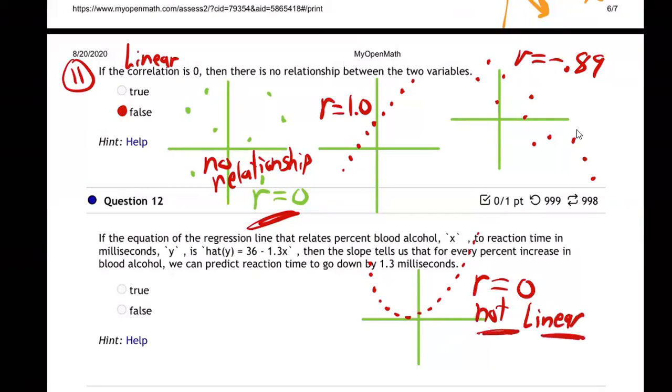relationship. They're not linear, but they still have a relationship, don't they? It's just not a line relationship. See, that's the trick, and that's the part I want you to understand.